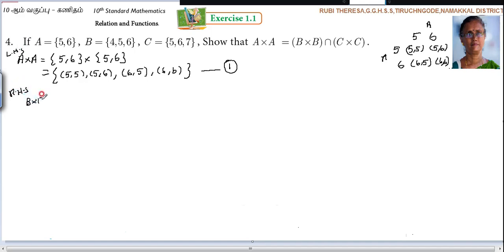That is B cross B. What is B? {4,5,6}. {4,5,6}, because it is B cross B. So 4 is paired with 4, 5, 6, so (4,4), next (4,5), next (4,6). Next 5 is with 4, 5, 6, so (5,4), (5,5), (5,6). Next 6 is paired with 4, 5, 6, so (6,4), (6,5), (6,6).